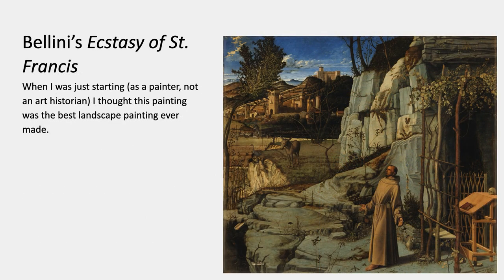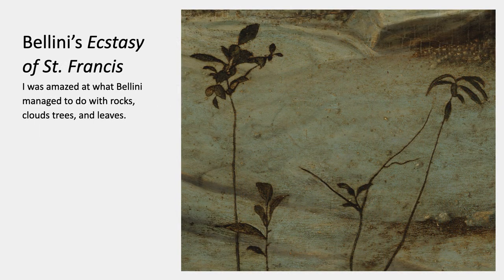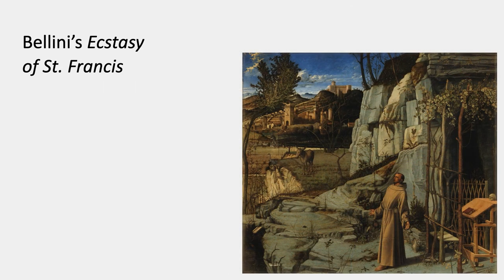Here's that example. This is the painting — a Renaissance painting by Giovanni Bellini called The Ecstasy of St. Francis. It shows the saint who has been studying in his cellule, a little cave where he lived in the so-called wilderness (really just Italy). Then he comes outside and has a revelation. When I was just starting out — I was originally a painter, not an art historian — I thought this was the best landscape painting ever made. I was absolutely amazed by it. When I visited New York City, I would go straight to this painting. Down at the very bottom are plants where every leaf is different, every stem goes in a slightly different direction, every rock is different, every tree is different.